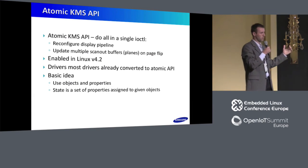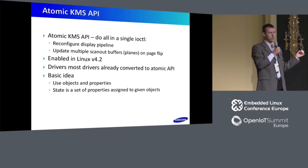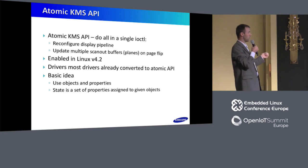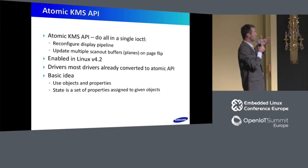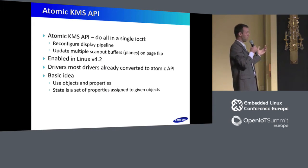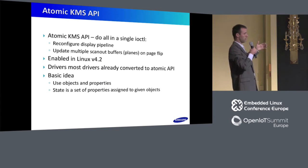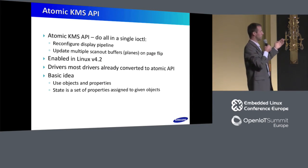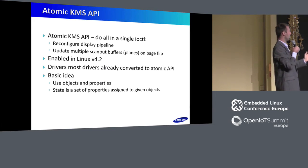The Atomic KMS API also solved the problem of all the intermediate steps in the pipeline configuration, since some of those steps might be hard to define or implement. The Atomic KMS API was enabled in Linux 4.2 and most drivers have since been converted. The main idea was that if we can define the state of the whole pipeline by the state of all objects and their properties, we can provide that list in a single IOCTL.